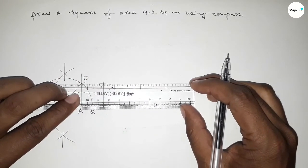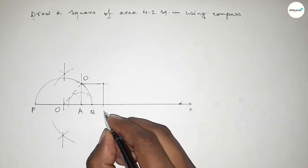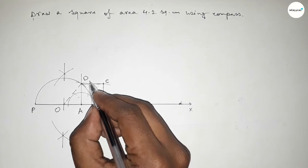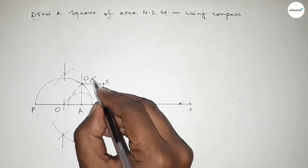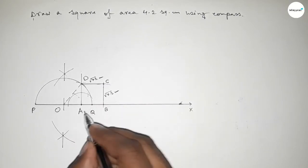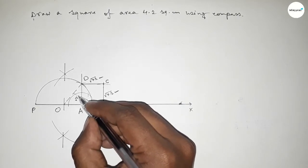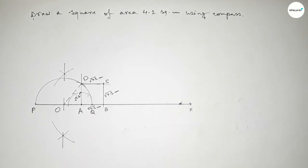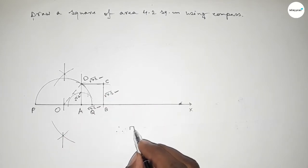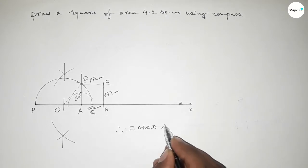Join the lines to complete the square, labeling the vertices B and C. Each side — DC, AB, AD, and BC — equals √4.2 centimeters. Therefore, square ABCD has each side equal to √4.2 centimeters.